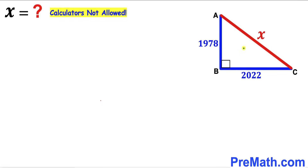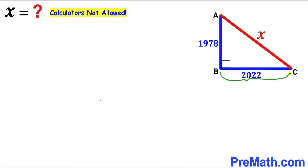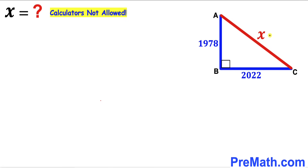Welcome to PreMath. In this video we have a right triangle ABC such that one of the legs AB is 1978 units, whereas leg BC is 2022 units, and the hypotenuse AC is represented by X. Our task is to find the value of X.